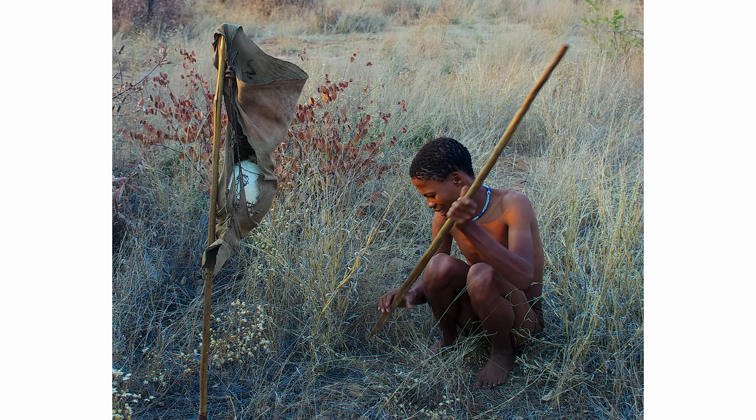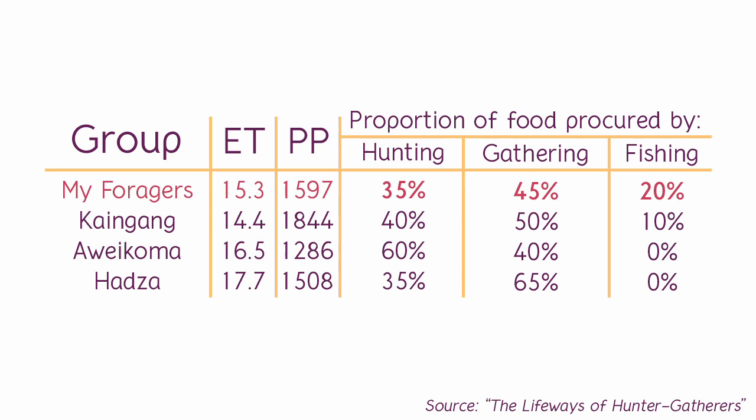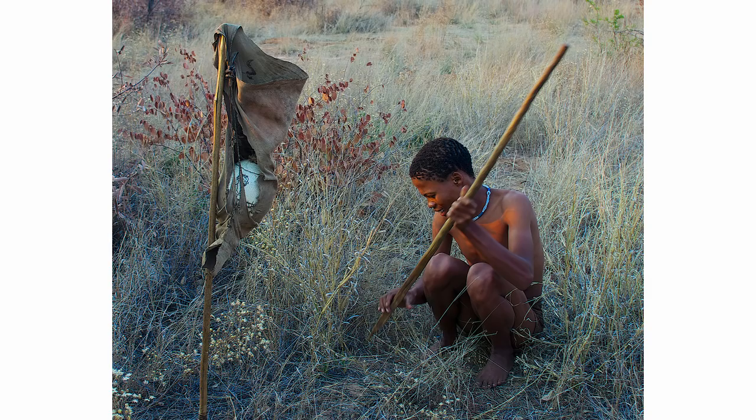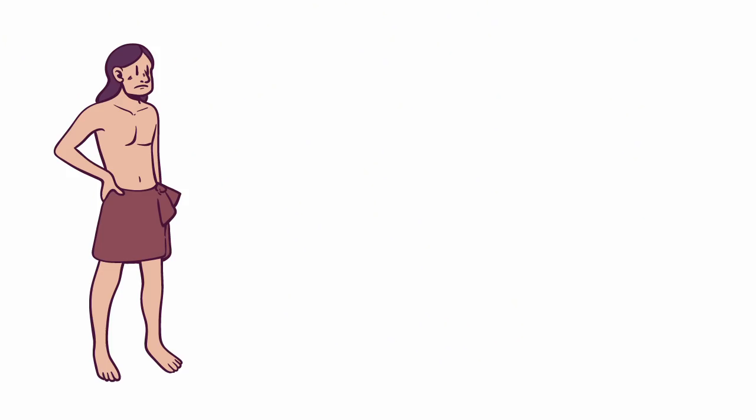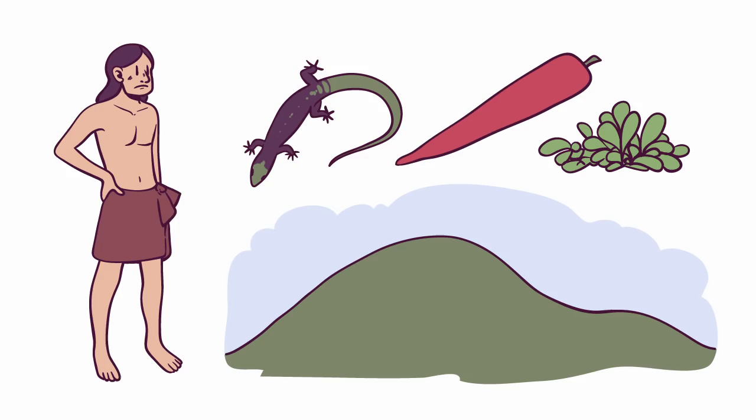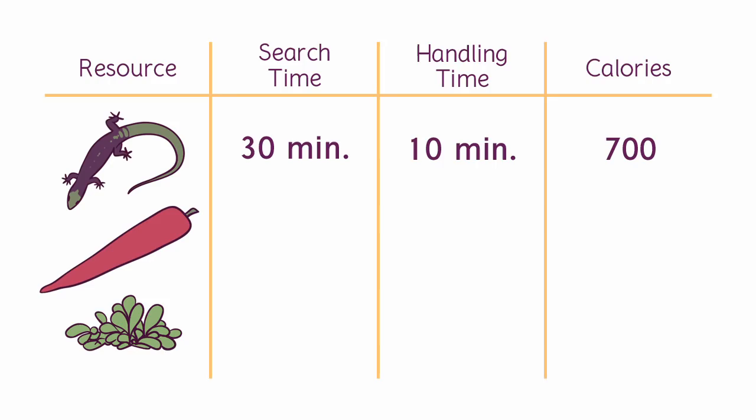One might assume that hunter-gatherers harvest all the edible things they can find, but that's not really the case. Let's say we have a forager. Today he's foraging on this hill, and it has these edible resources available: lizards, big starchy tubers, and herbs. Lizards take 30 minutes to find, 10 minutes to harvest and process, and each provides around 700 calories.